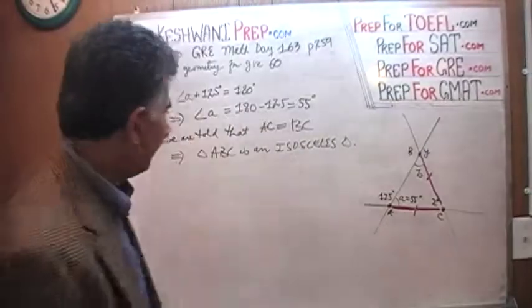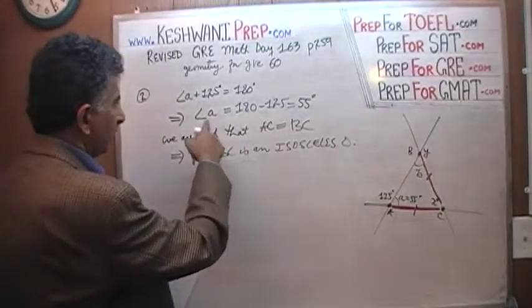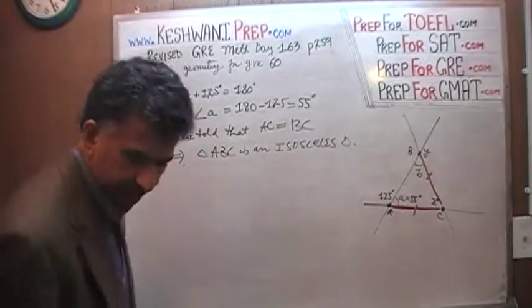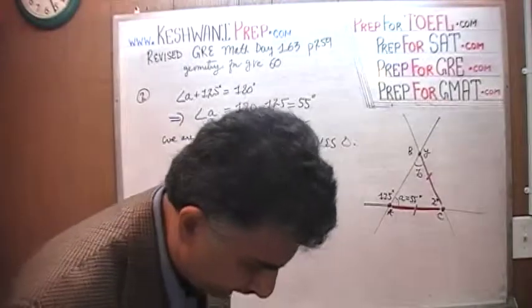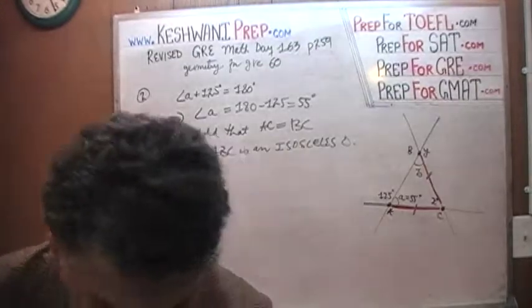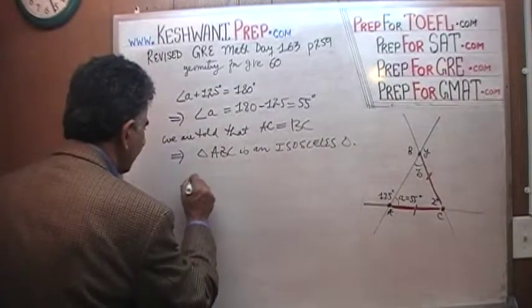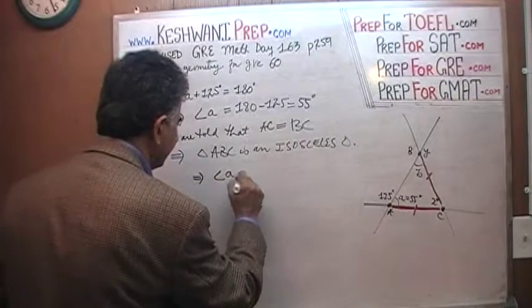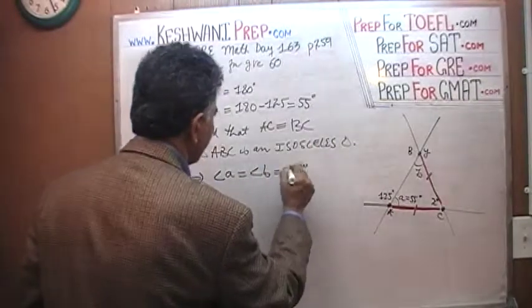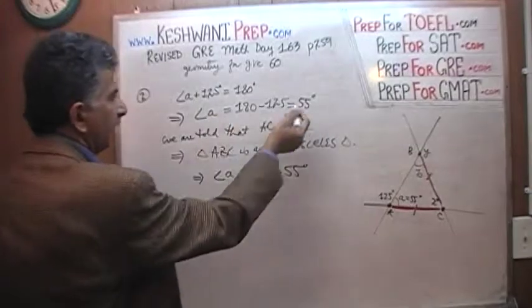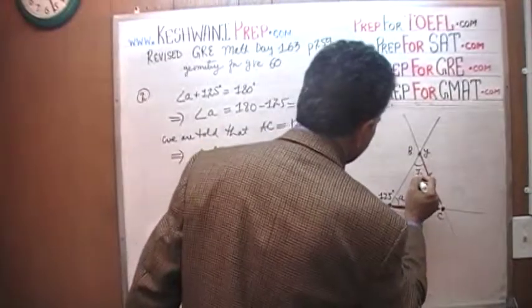That implies that because triangle ABC is an isosceles triangle and AC equals BC, angle A must equal angle B, which we know equals 55. Voila! Because we just found out that angle A is 55, so this guy is also 55.